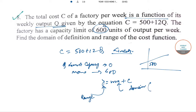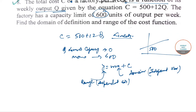Domain is the maximum and minimum value of the independent variable. When it comes to the dependent variable, we get the range. So the domain is very clear: Q lies between 0 and 600, so the domain is [0, 600].